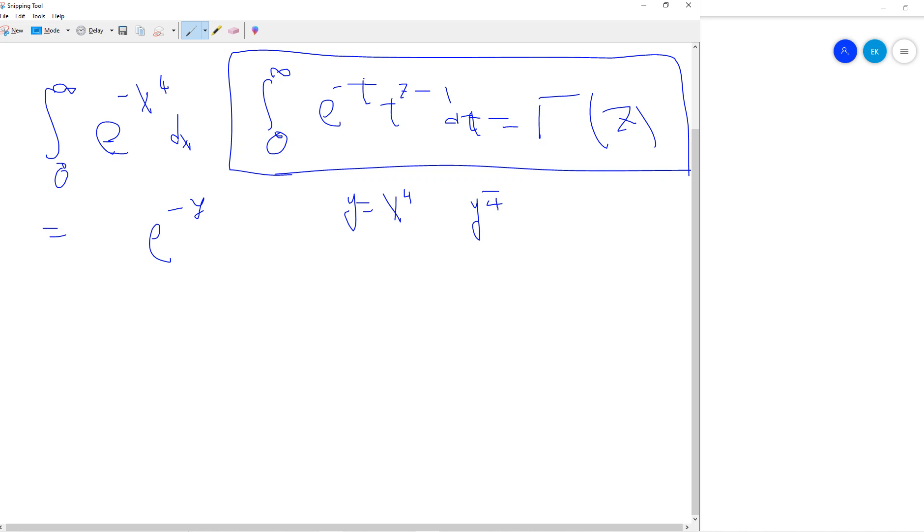So since it's positive, we can just directly write y to the 1 over fourth power is x.